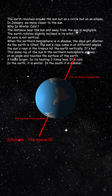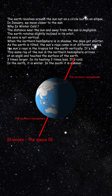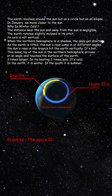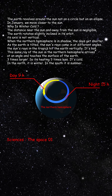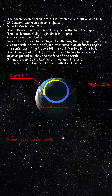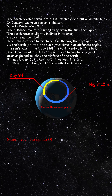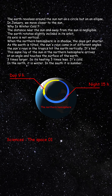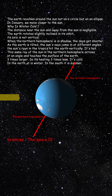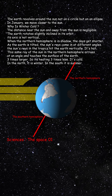The Earth rotates slightly inclined in its orbit — its axis is not vertical. When the northern hemisphere is in shadow, the days get shorter. As the Earth is tilted, the Sun's rays come in at different angles.